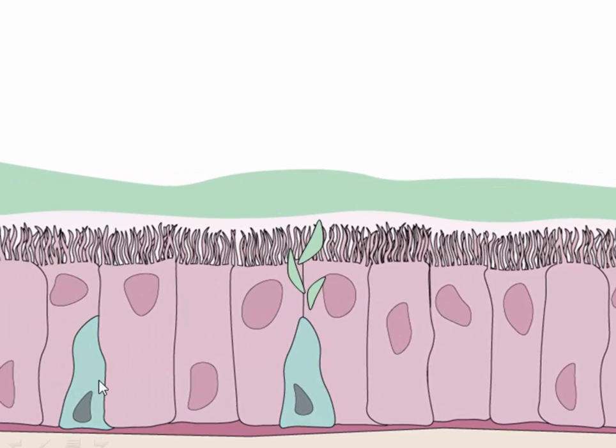As you can see, the top of these different columnar cells have got all these different little protrusions here. Things that look a little bit like tiny, tiny, tiny fingers, much, much smaller than any of the big nasal hairs.